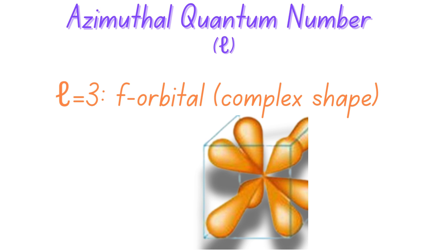The shape of an orbital affects how electrons distribute around the nucleus. Different shapes mean different probabilities of finding an electron in various regions of space. So the azimuthal quantum number l determines the shape of the space where an electron is likely to be found, helping us understand the geometry of atomic orbitals.